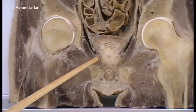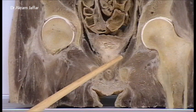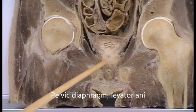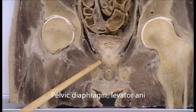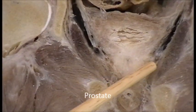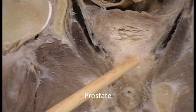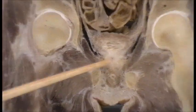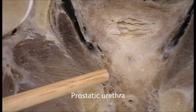On the inside of the obturator internus, you can see that there is a very thin muscle which forms the pelvic diaphragm, mainly formed by the levator ani muscle. That is, on the inside of the obturator internus is the levator ani. The levator ani is clasping the prostate gland located beneath the urinary bladder, and you can see that part of the prostatic urethra can be shown here.